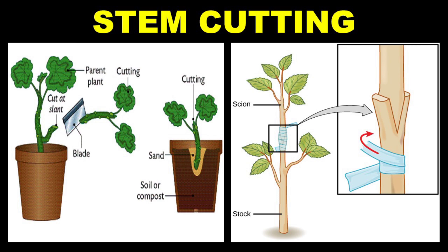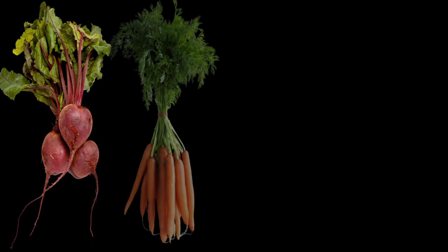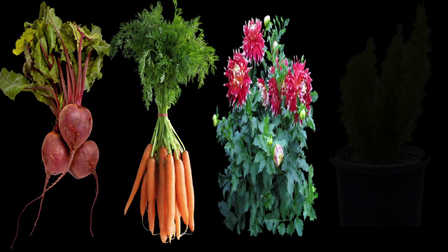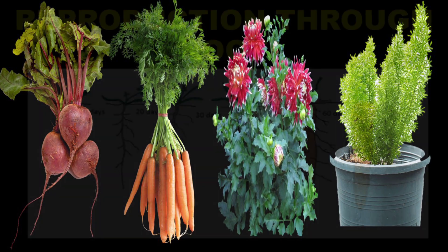Next is reproduction through roots. Common examples include beetroot, carrot, dahlia, asparagus, and yam. In this method, the roots — for example if you look at the dahlia root or the root of sweet potato — they are very fleshy.